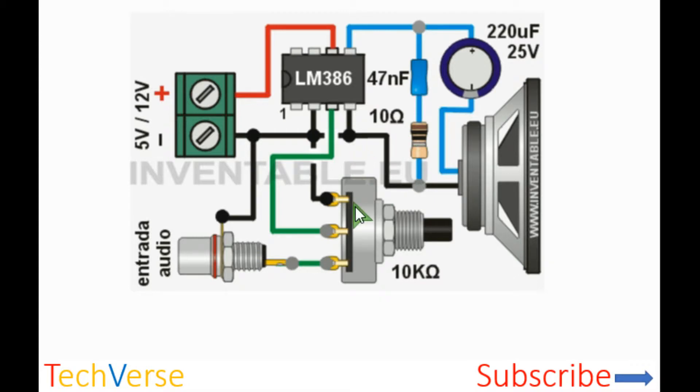Connect the potentiometer across the audio jack positive and ground. The middle terminal of the potentiometer indicates the volume and connects to pin 3. You can move the potentiometer around until you get the desired output volume.